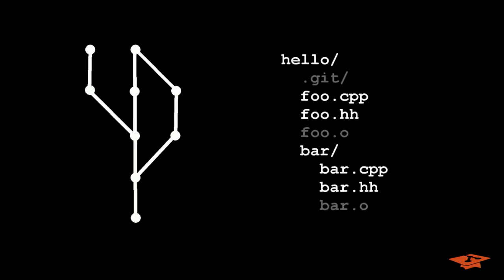This is your Git repo. It's young and it's called hello and it's showing its tracked files for all to see. How embarrassing. Tracked files are the files the repo was told to care about, shown in white. Untracked files are essentially social outcasts, shown in gray. The red arrow represents what commit you're currently checked out to.